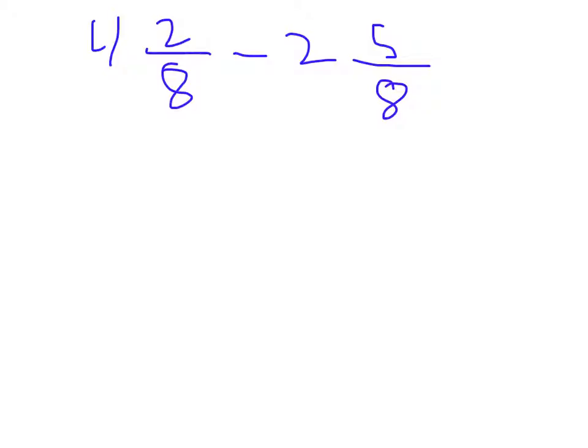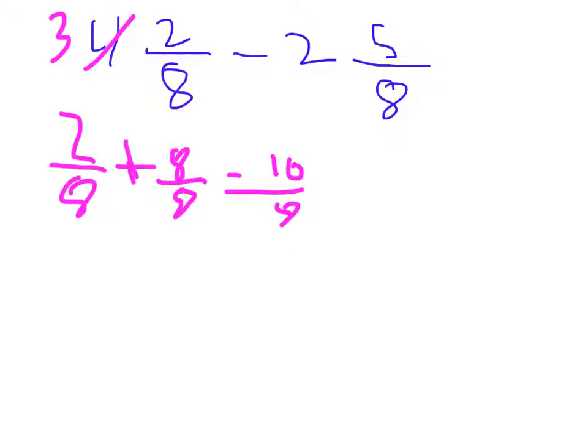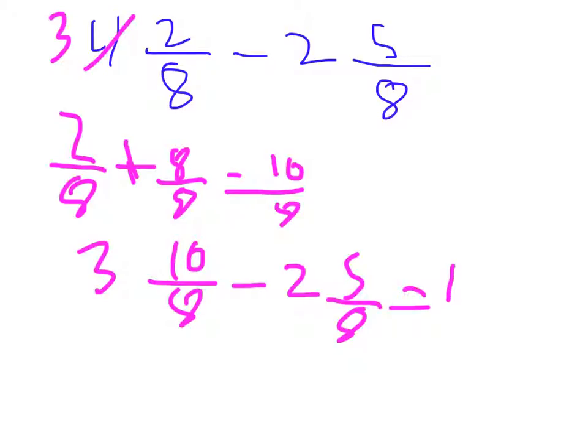Here we have 4 and 2 eighths minus 2 and 5 eighths. We are going to do the same thing. The answer is 1 and 5 eighths, which you can simplify.